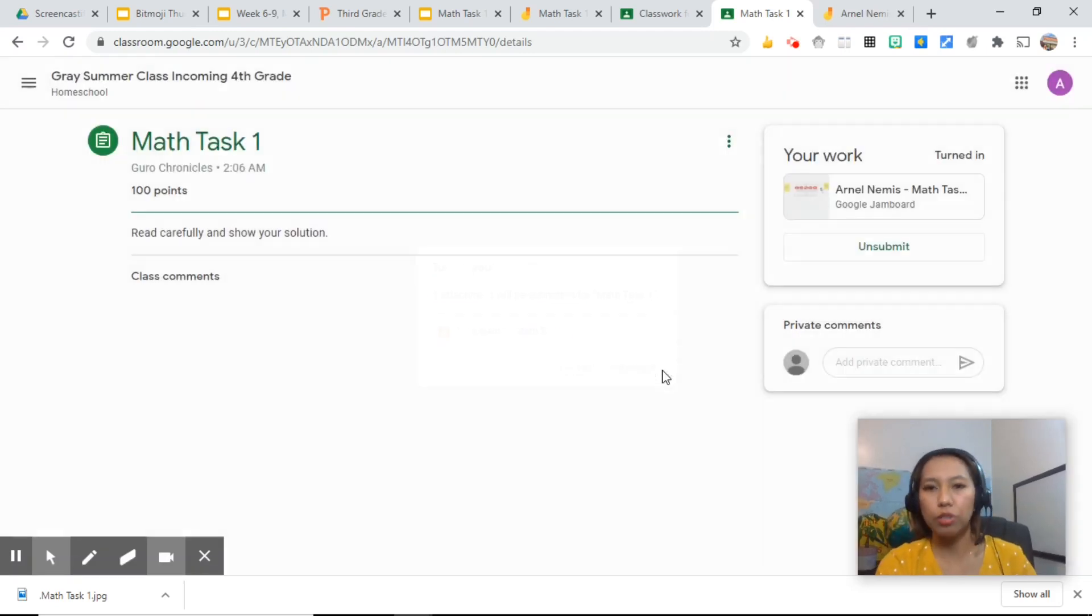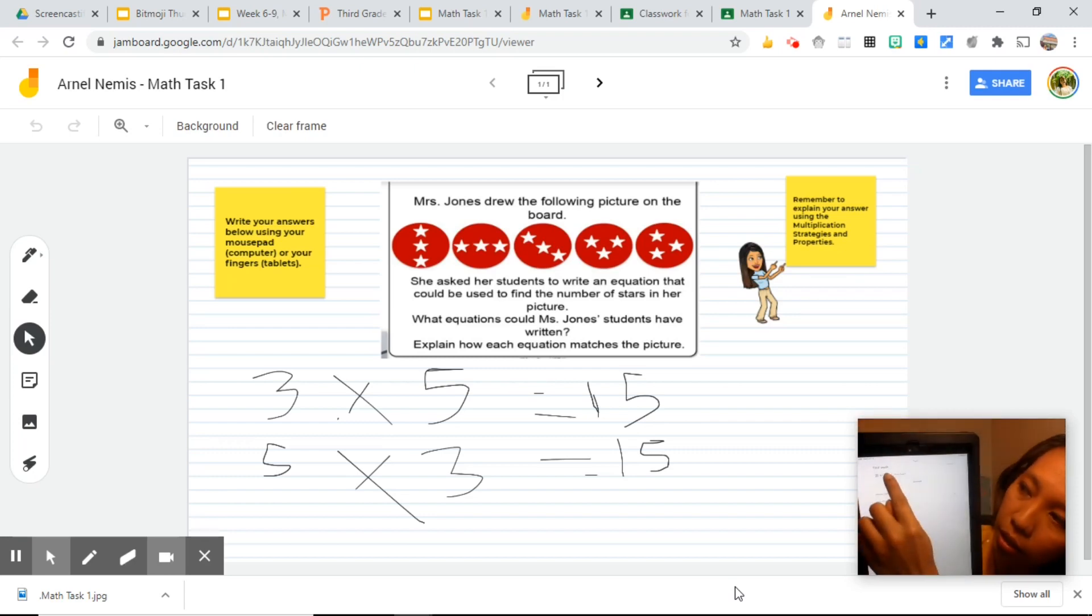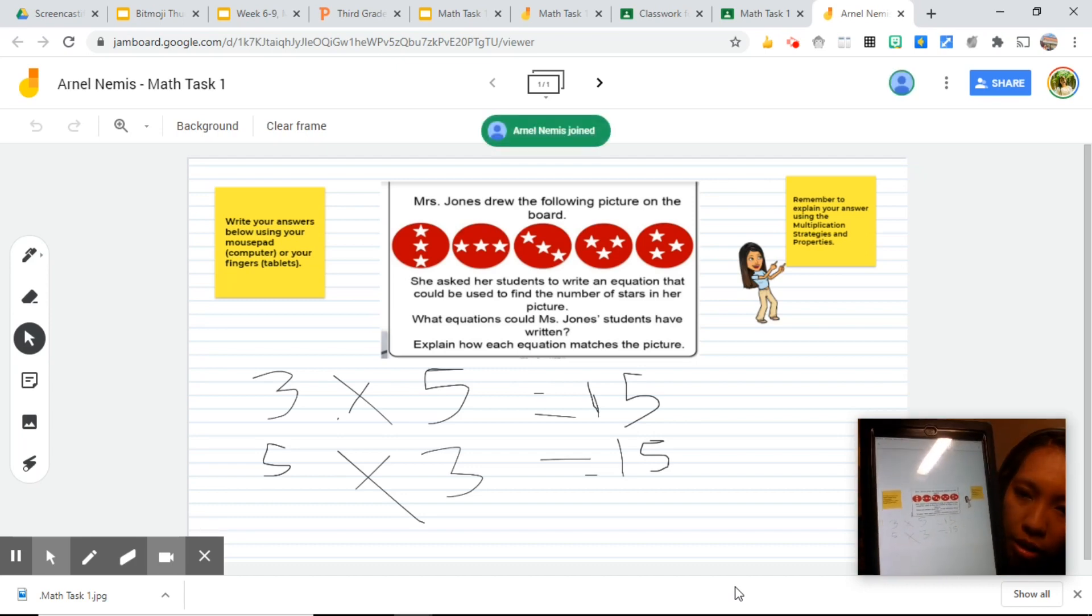And now I'm going to show you how a student can access it from their iPad. Once they click on the task, click the arrow below to show the task. Click it. And as you can see, it won't open in the Google Classroom platform. So what they can do is click that small arrow at the right corner of their tablet so that it will bring them to the Jamboard app.